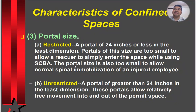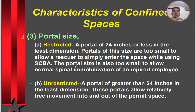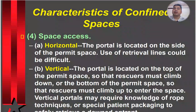Portal size — restricted: a portal of 24 inches or less in the least dimension. Portals of this size are too small to allow a rescuer to enter while using self-contained breathing apparatus, and also too small to allow normal spinal immobilization of an injured employee. Unrestricted: a portal of greater than 24 inches in the least dimension — these portals allow relatively free movement into and out of the permit space.